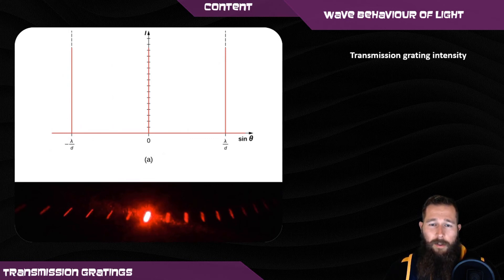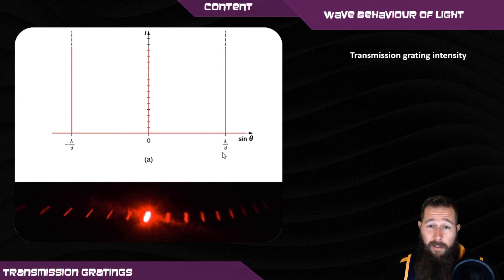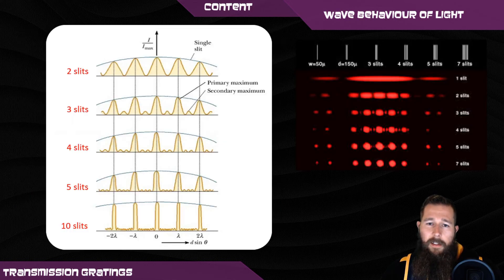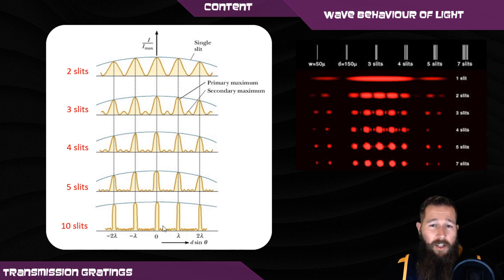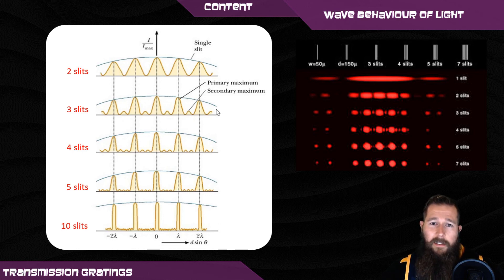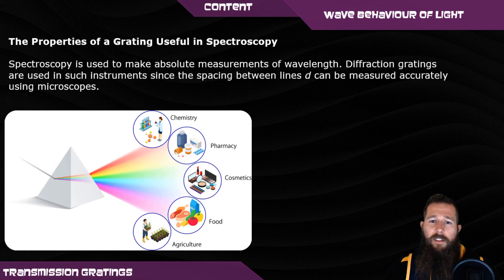With a transmission grating, where you have a large number of lines in a small space with multiple light sources, the intensity is almost maximum at each order — very sharp where there's constructive interference, with minimal or no light where there's destructive interference. As you go from two slits and continue adding more slits, the areas of constructive interference get sharper, the dark spots of destructive interference get wider, and the intensity as the light moves away from the central maximum also gets duller.